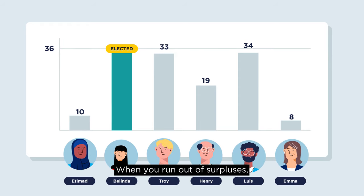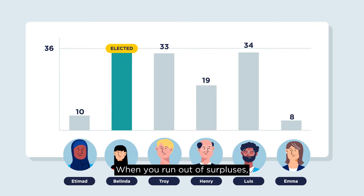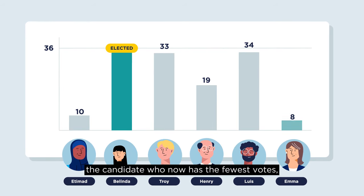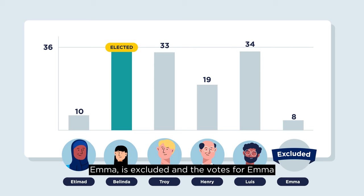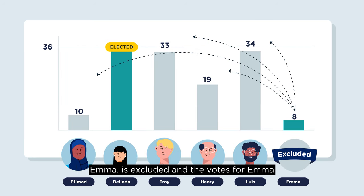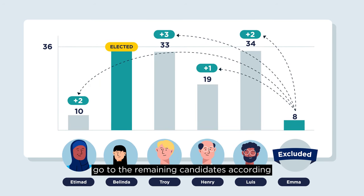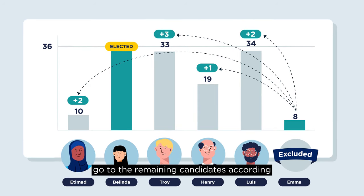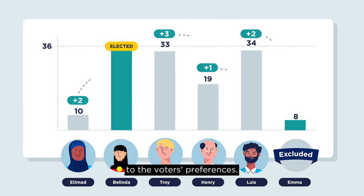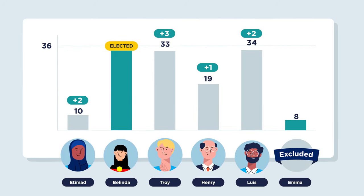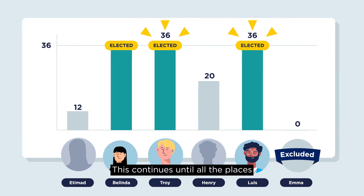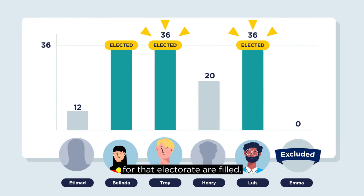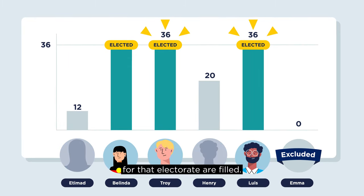When you run out of surpluses, the candidate who now has the fewest votes — Emma — is excluded, and the votes for Emma go to the remaining candidates according to the voters' preferences. This continues until all the places for that electorate are filled.